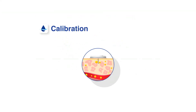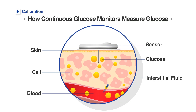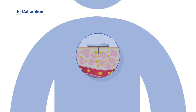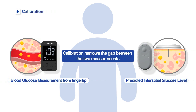The continuous glucose monitoring sensor measures blood glucose by analyzing the glucose concentration in the interstitial fluid. However, there is a delay of around 5 to 15 minutes compared to actual blood glucose level. To minimize this difference, users should use blood glucose readings from their fingertip measured within 5 minutes to calibrate the sensor's blood glucose level. Calibration adjusts sensor readings with actual blood glucose to optimize Kerasens Air performance.